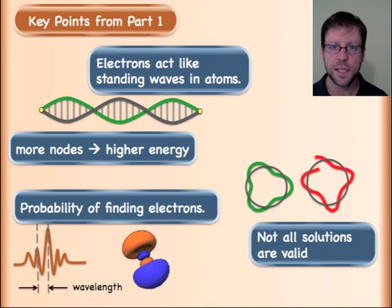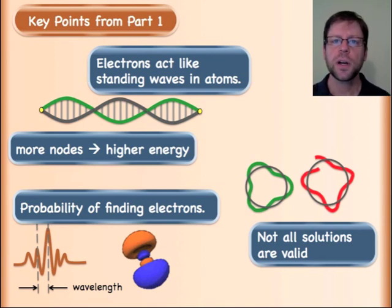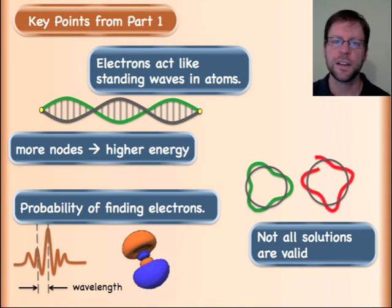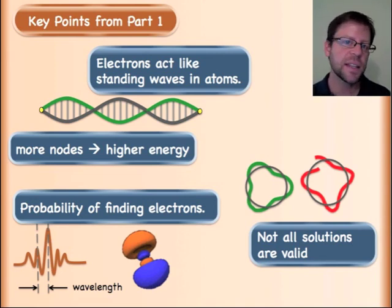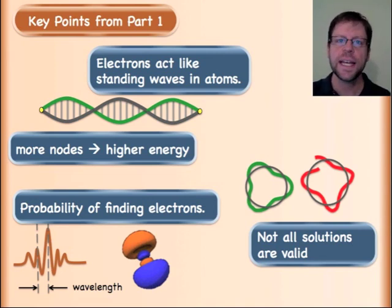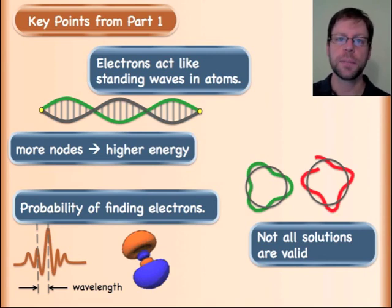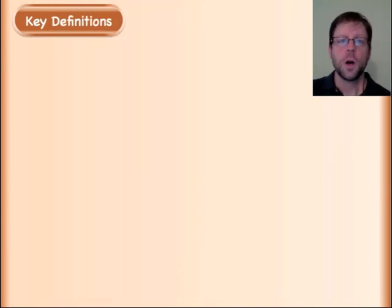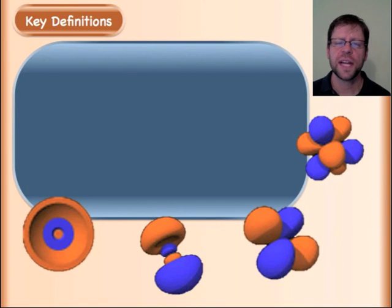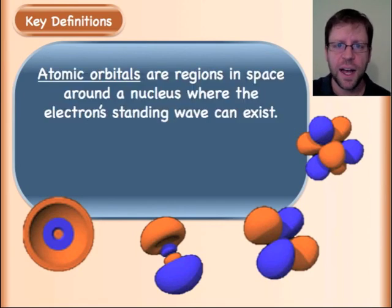Lastly, we have this big idea of matter waves — it's still a very abstract concept — but remember we are going to talk about the probability of finding an electron, because that's the tangible thing we can actually get after, as long as we are willing to do the mathematical manipulation of the wave function.